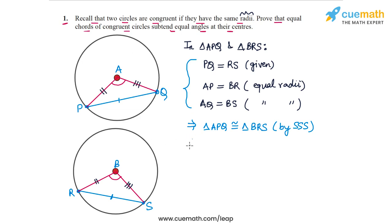And this means that all the other corresponding parts are also equal. In particular, this angle PAQ and this angle RBS, they are equal. So angle PAQ is equal to angle RBS by CPCT,